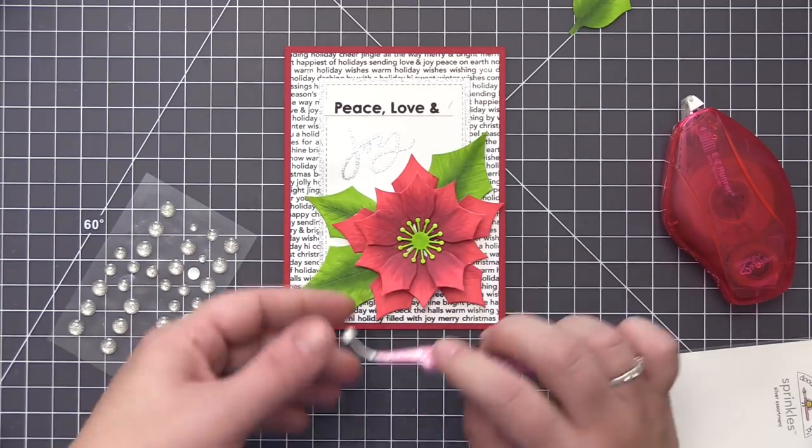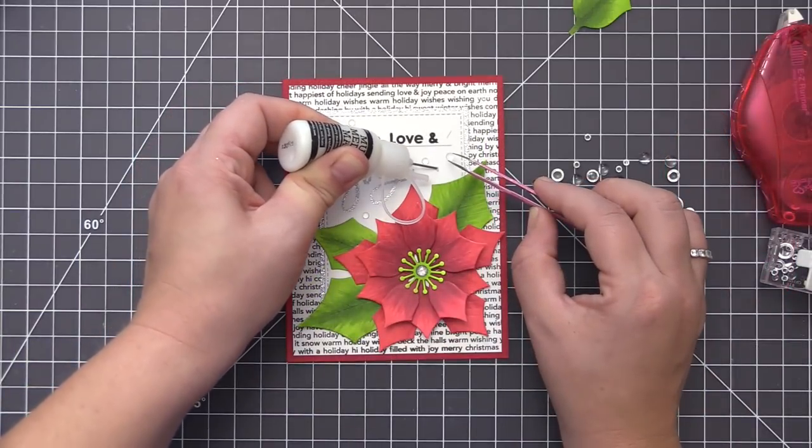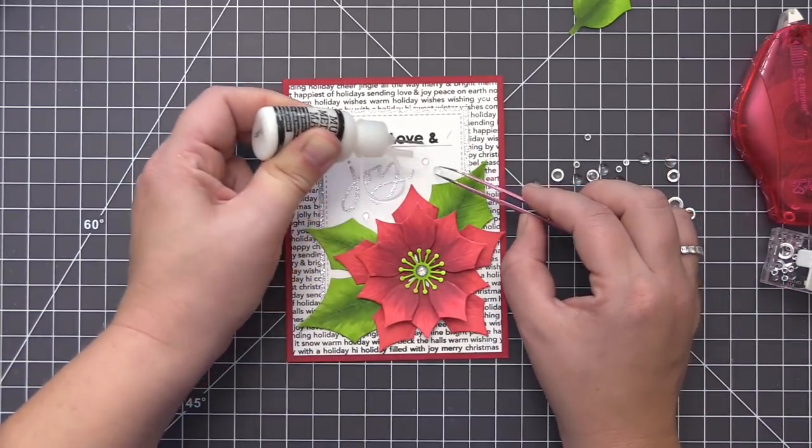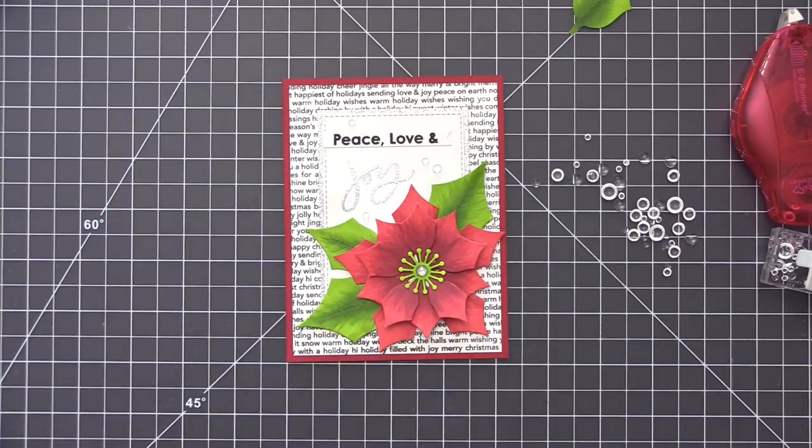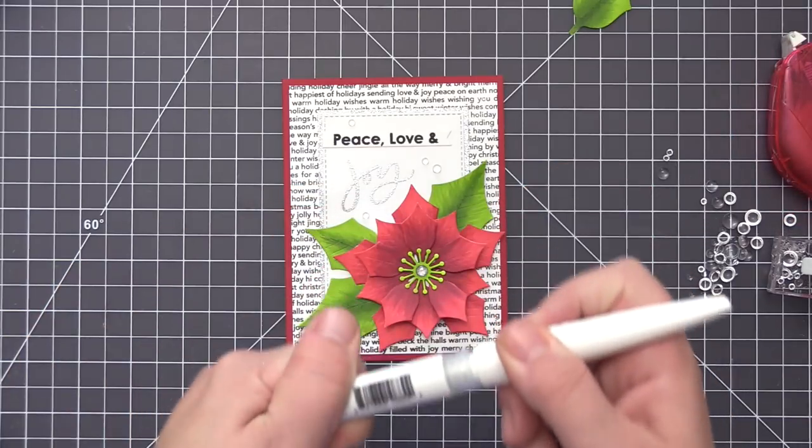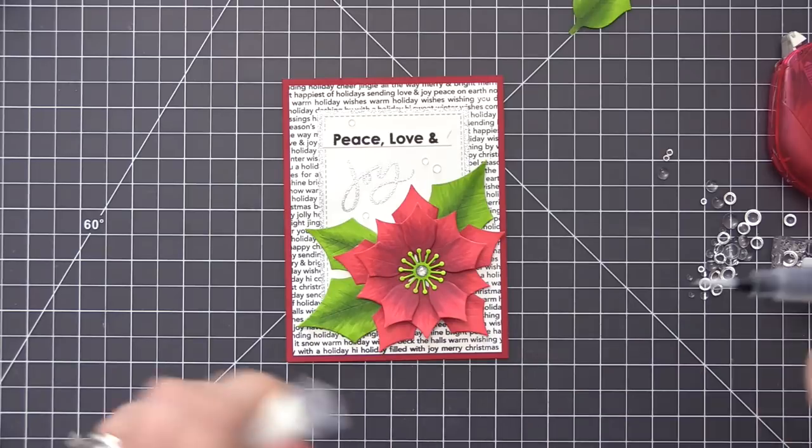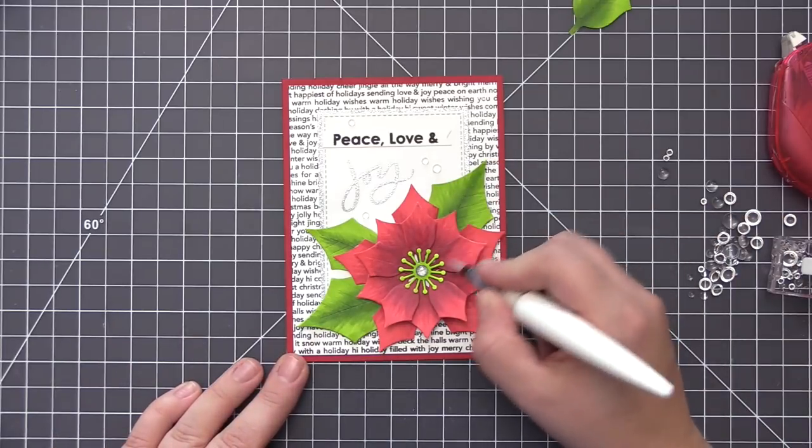And to finish up the flower I'm going to add a Doodlebug enamel dot to the center. This is a silver sparkle enamel dot which coordinates nicely with the silver embossing we did on the sentiment as well as the silver sparkle cardstock that we used under the main panel. Then I'm going to add a few clear droplets kind of scattered around that sentiment and then the last thing I'm going to do is add a little bit of glitter to some of the poinsettia petals as well as the leaves with my nouveau glitter pen.